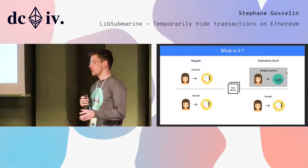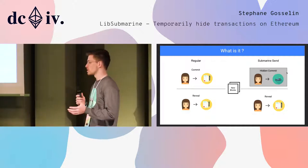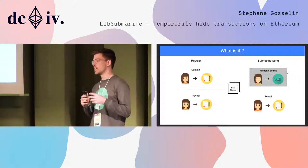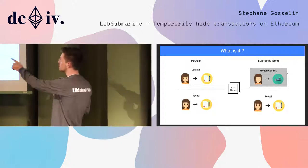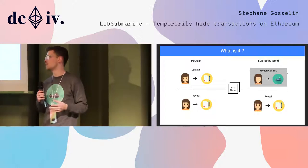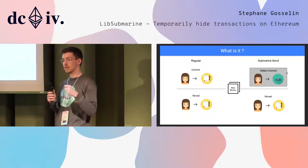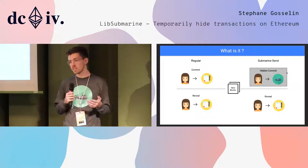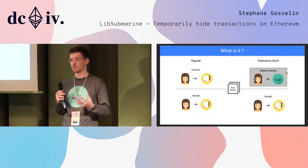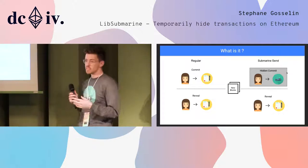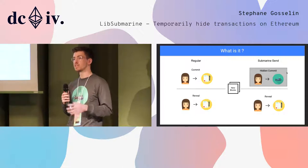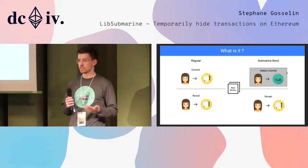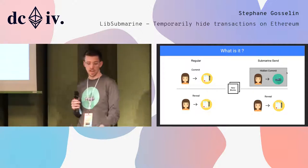LibSubmarine is the right solution to prevent reordering attacks and also to increase the level of privacy in a commit-reveal scheme, really eliminating the signal that the commit provides. On the left side of the screen you can see what a regular commit-reveal scheme looks like — the commit hashes the data, but you still see participation and the value being committed. On the right side, from a submarine perspective, the entire commit period is completely hidden: you don't see who's participating, the value, or the data being committed. But everything is revealed at the end.